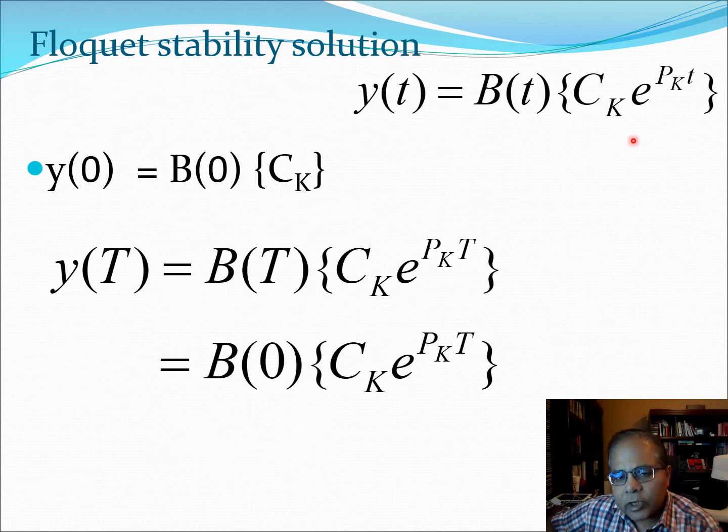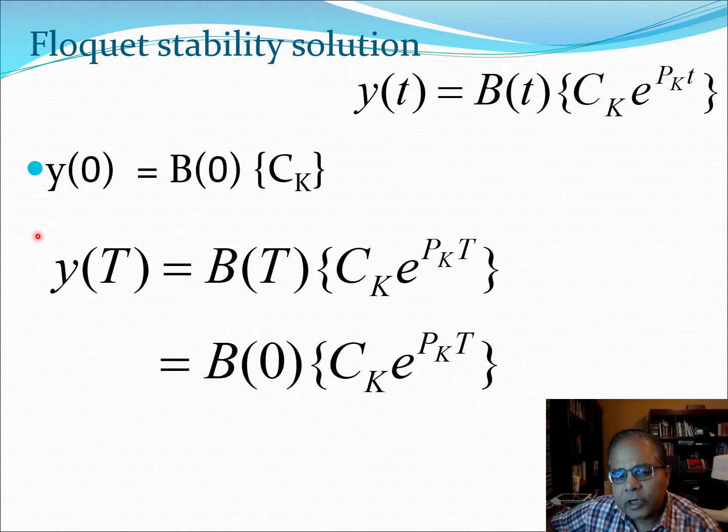So now let us look at the solution we have started with. We have started with the solution B(t) C_K e^(P_K t). And now let's look at Y zero. To get Y zero, we substitute T equal to zero into this equation. This gives us B zero into C_K. And then we can also write Y at time period T is B at time period T into C_K e^(P_K T). So all I have done in these two equations is I have substituted T equal to zero and T equal to capital T into this equation.